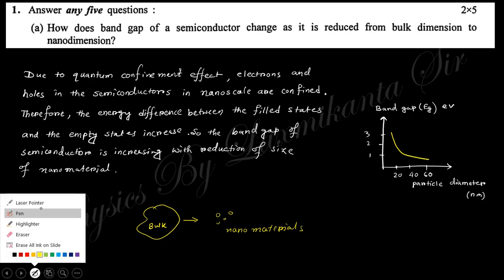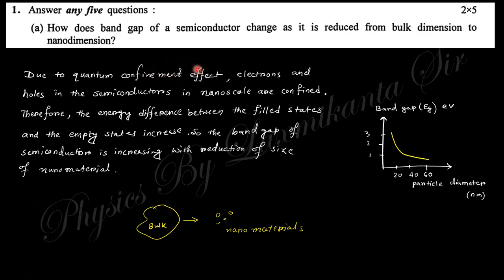You can see from this graphical representation that when the diameter of the particle reduces, the band gap increases. Why? Because of the quantum confinement effect. The electrons and holes in the semiconductor at nanoscale are confined. The energy difference between the filled states and empty states increases. The conduction band to valence band separation increases when the dimension reduces towards nanomaterials.